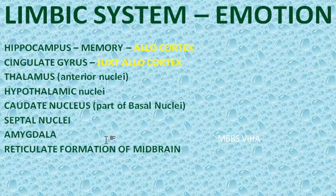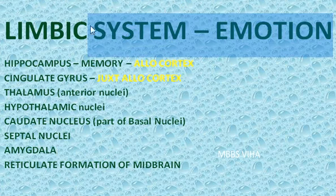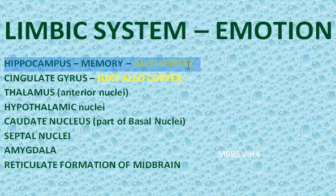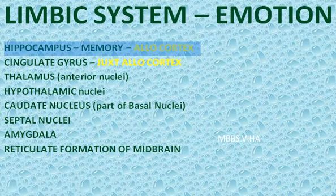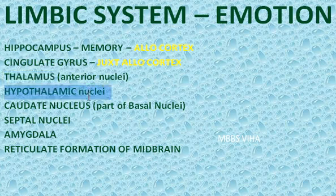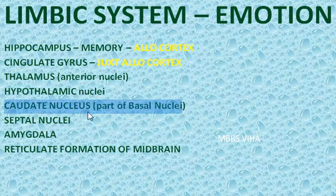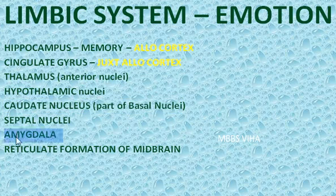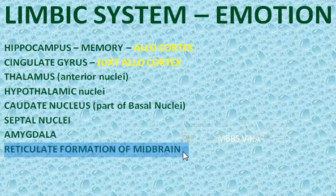For exam purposes: the limbic system is concerned with emotion. It is the oldest part of the cerebral cortex. If asked which is the oldest part of the limbic system, the answer is the hippocampus. The parts of the limbic system are: hippocampus, cingulate gyrus, some nuclei of the thalamus, some nuclei of the hypothalamus, the caudate nucleus (part of basal nuclei), septal nuclei, amygdala, and lastly don't forget the reticular formation of the midbrain.